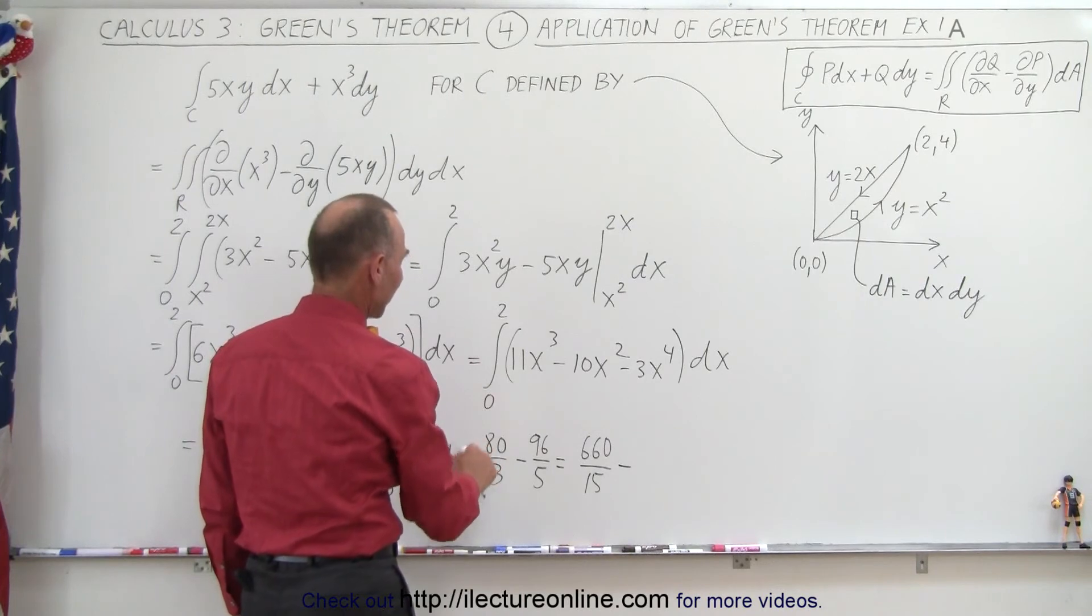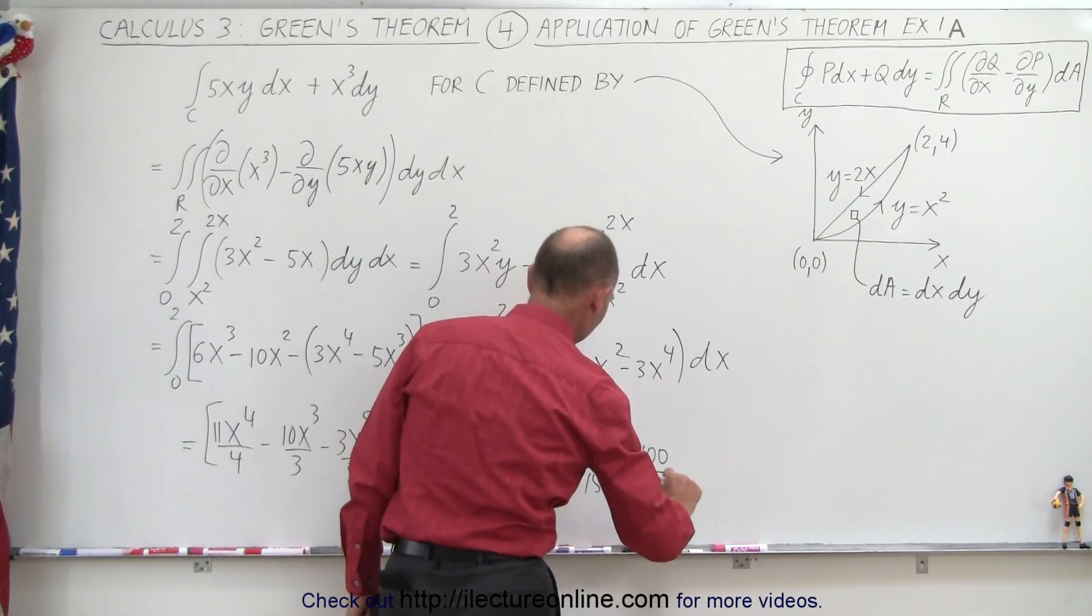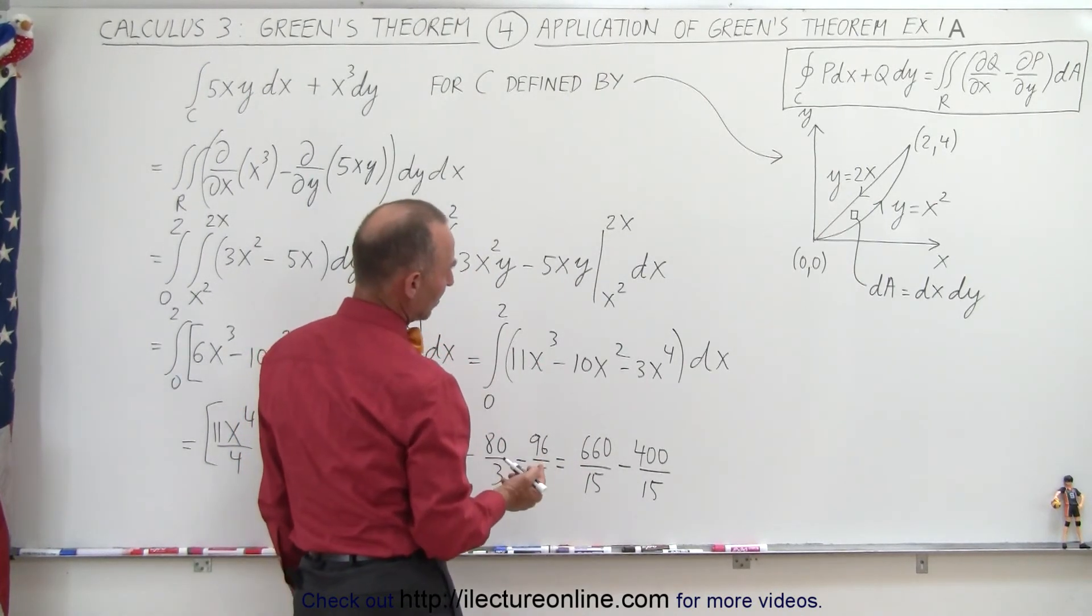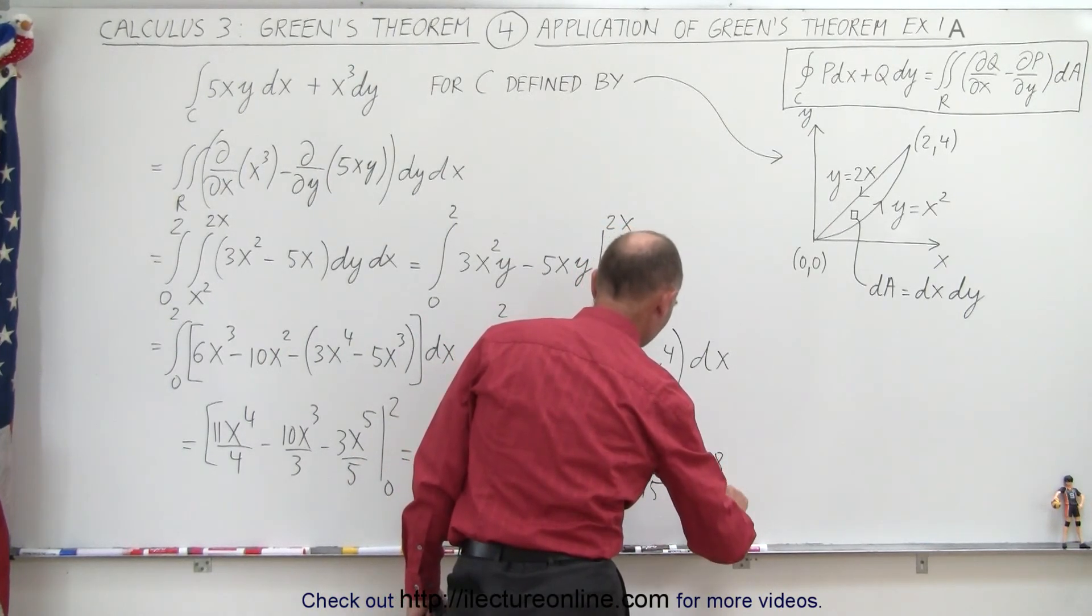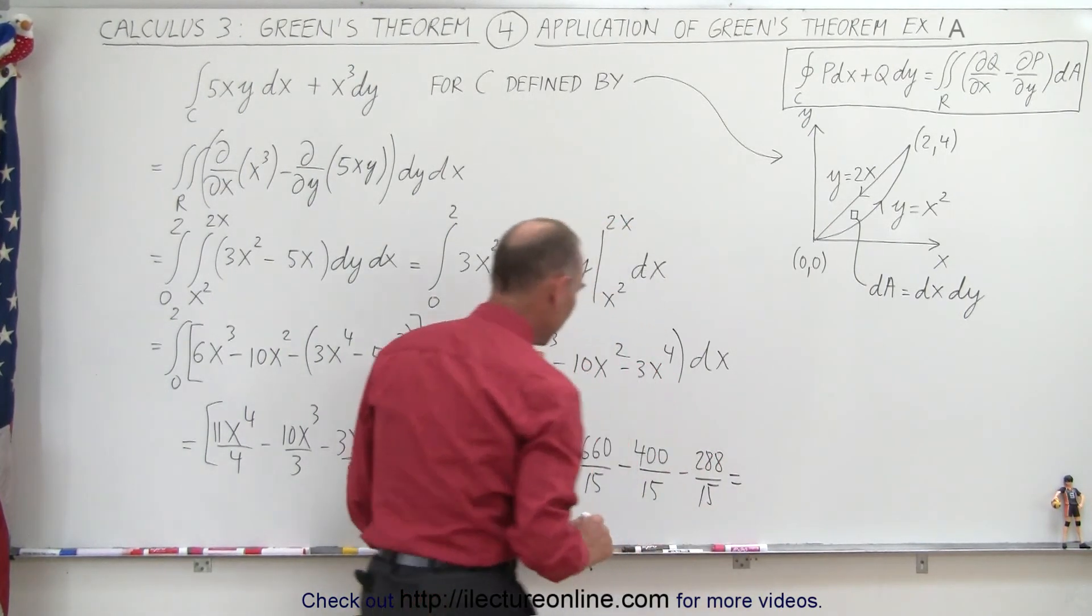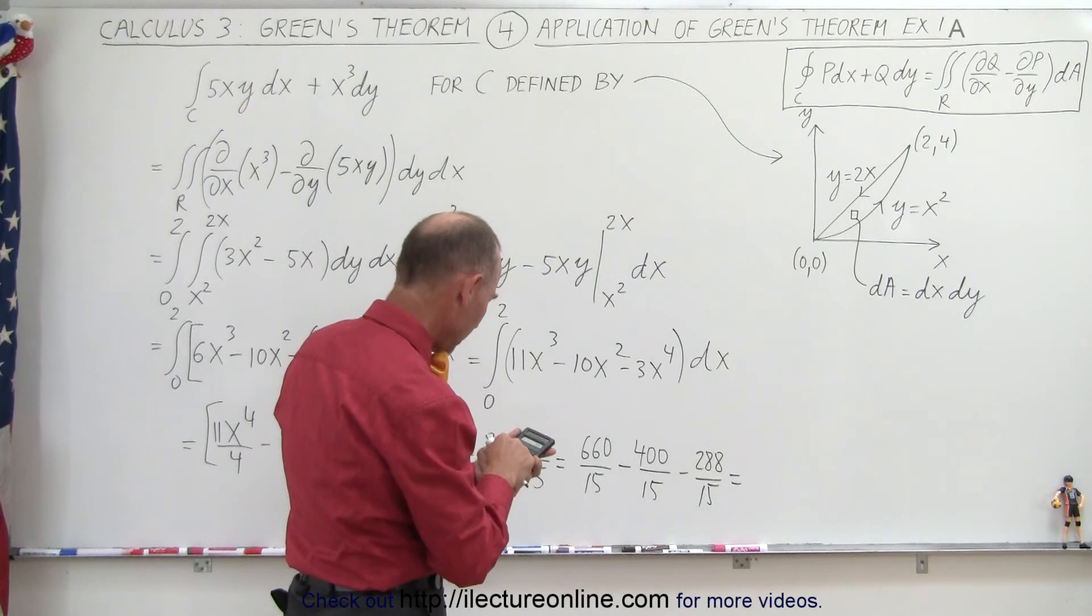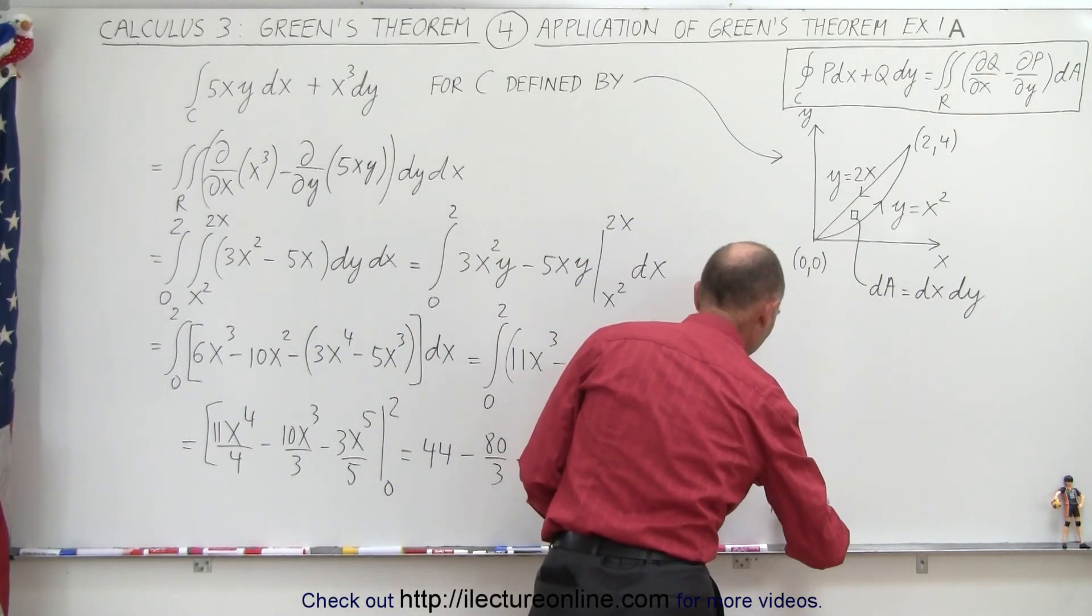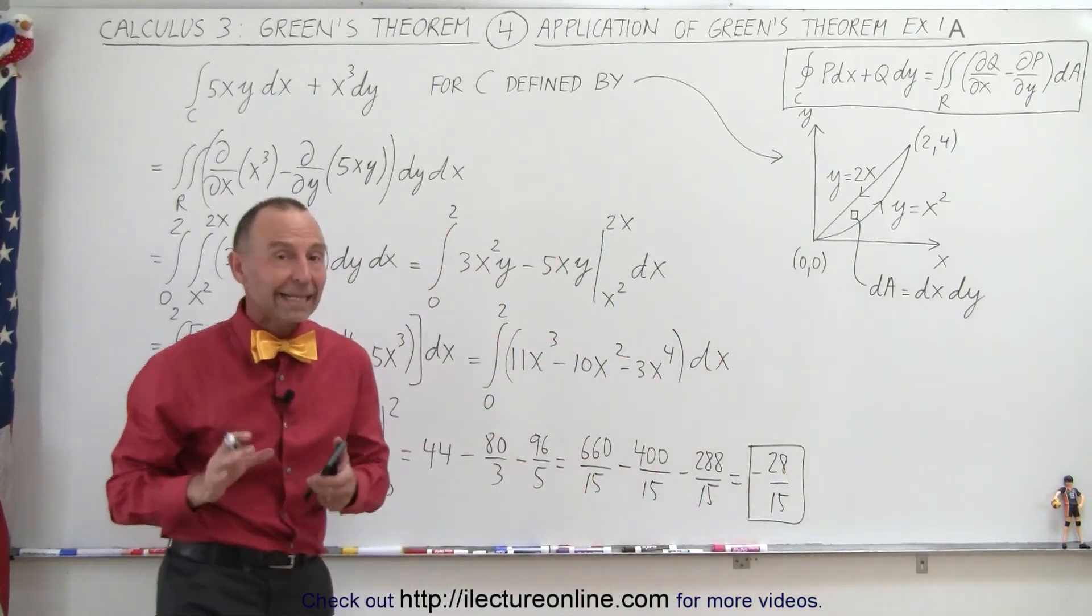15, and that would be 3 times that, that would be 300 minus 12, that would be -288 over 15. And let's see here, that's 660 minus 400 minus 288. That would be -28 over 15, which is the final result of that particular line integral.